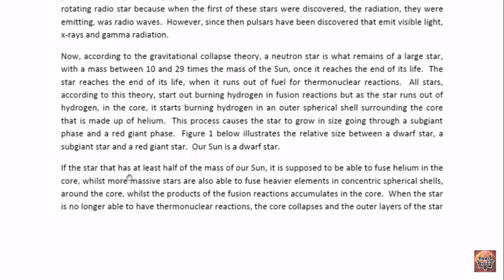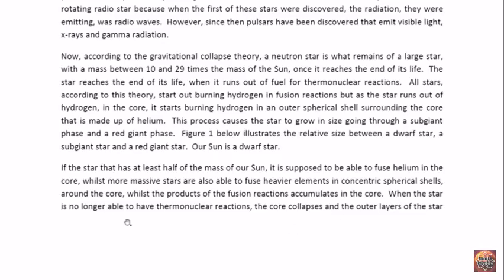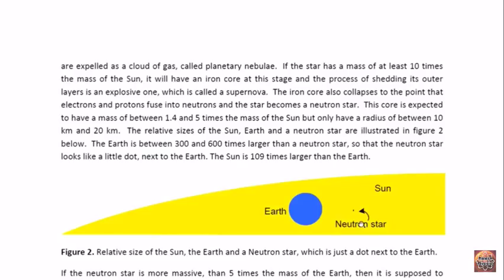If the star has at least half of the mass of the Sun, it is supposed to be able to fuse helium in the core, whilst more massive stars are also able to fuse heavier elements in concentric spherical shells around the core, whilst the products of the fusion reaction accumulate in the core. When the star is no longer able to have thermonuclear reactions, the core, according to the gravitational collapse theory, collapses and the outer layers of the star are expelled as a cloud of gas called planetary nebulae.